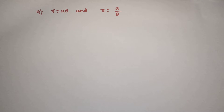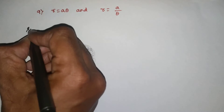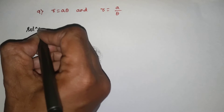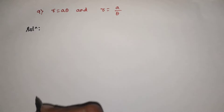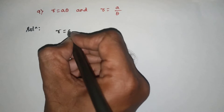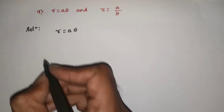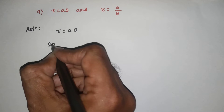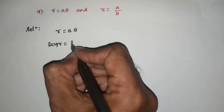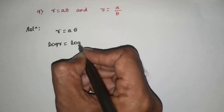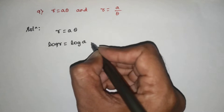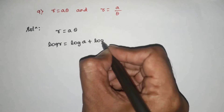The next question: r is equal to a theta and r is equal to a by theta. Consider the first curve, r is equal to a theta. Take log on both sides: log r is equal to log a plus log theta.